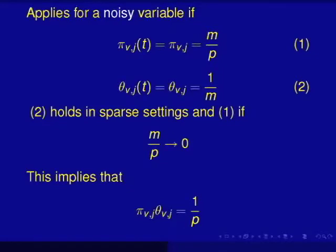Now for this distribution result to hold, the key is that these values, pi and theta, must not be dependent on the terminal node of interest. They can only depend upon the variable and the depth of the variable. And so that assumption could be satisfied in many ways, but one of the most fruitful ways to sort of get at this is to think about what if V is a noisy variable?